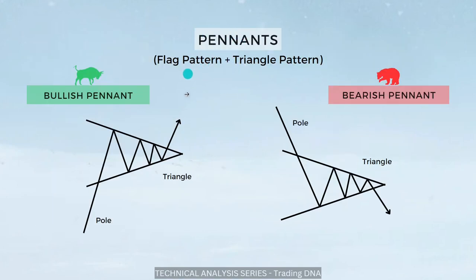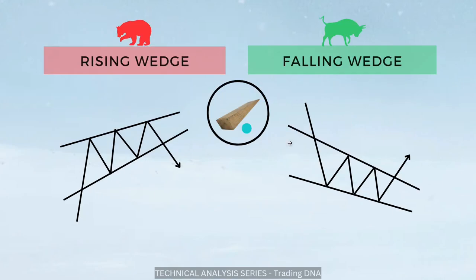Pennants have the characteristics of both flag pattern and triangle pattern. Look at the pole — instead of a parallel channel flag, this pattern has a triangle. The bearish pennant is just opposite to the bullish pennant. Next is the wedge pattern. Since this pattern looks like a wedge, it is called the wedge pattern. It is more like the flag pattern, but the key difference is that flag patterns are continuation patterns while wedge patterns are mostly reversal patterns. In the flag pattern you find a parallel channel, but in the wedge pattern the channels are not parallel — they are converging. Both trend lines converge at a point.